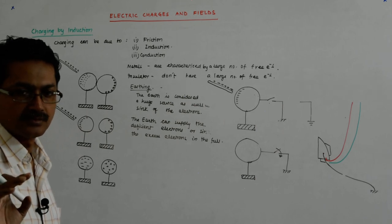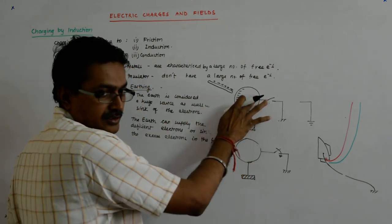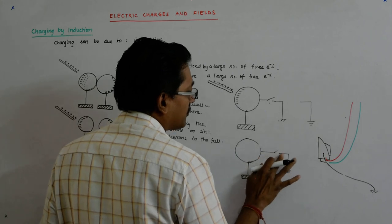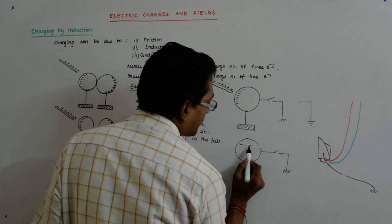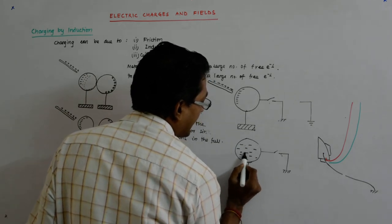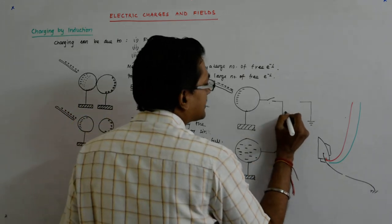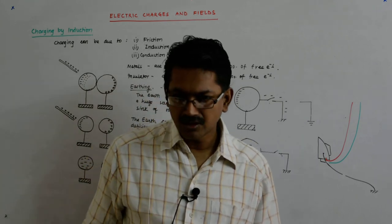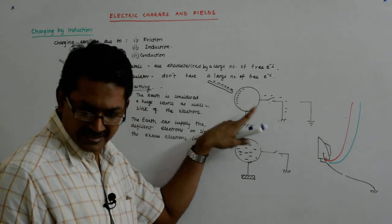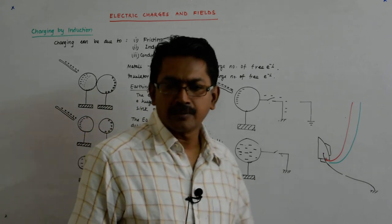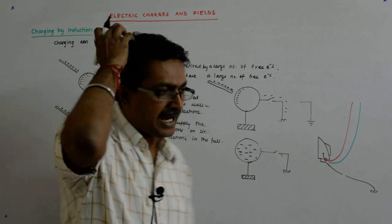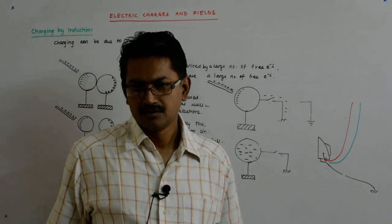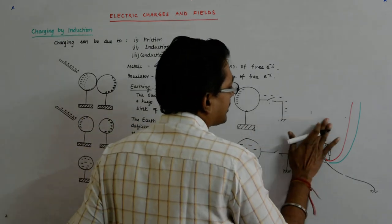The earth will first sense the deficiency and supply electrons. So this part gets charged, and the moment you remove the rod and switch off the earthing, there is now an excess of electrons in the sphere — because the earth supplied them sensing the deficiency. So the sphere ends up with an excess of electrons, and when you remove the rod it becomes uniformly negatively charged.